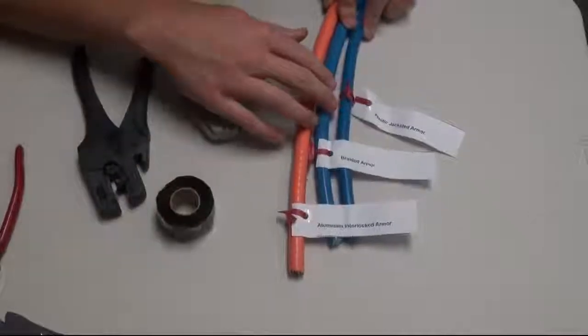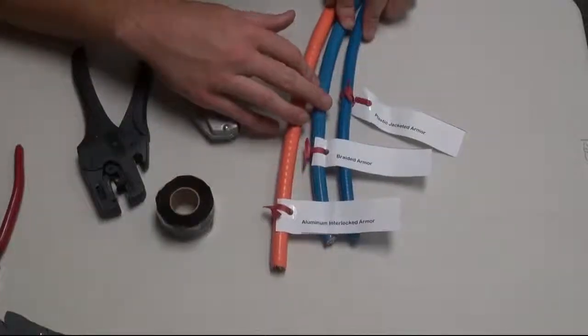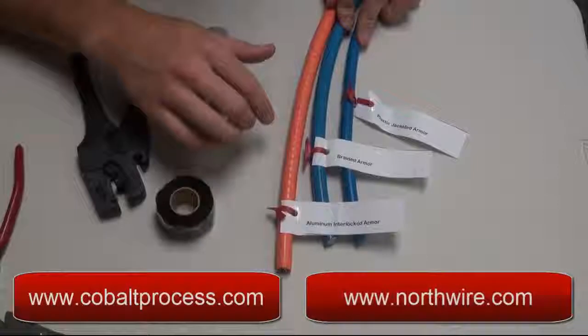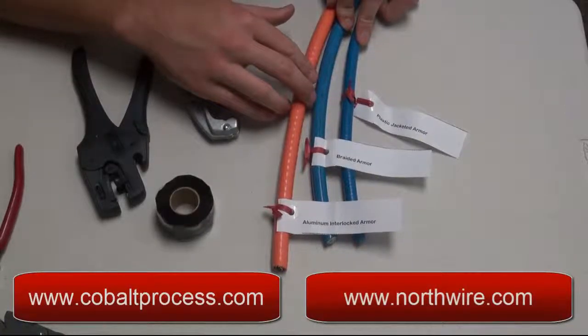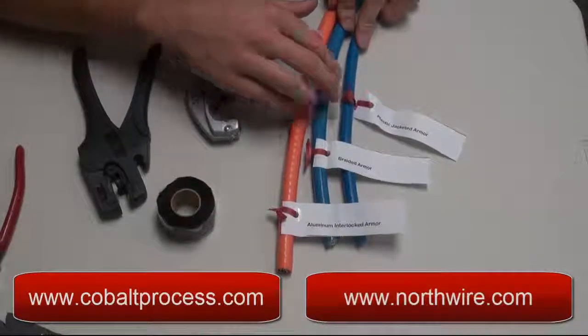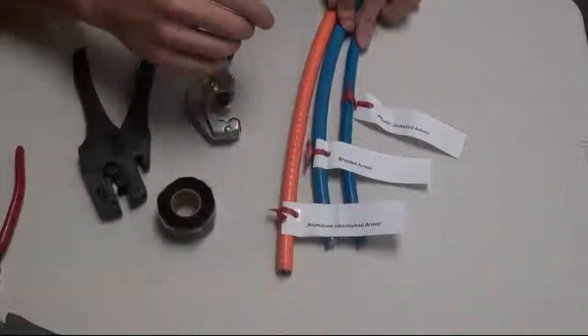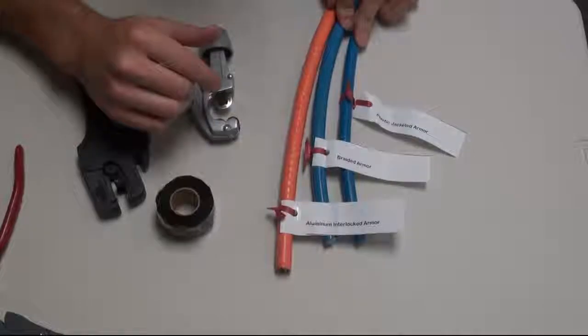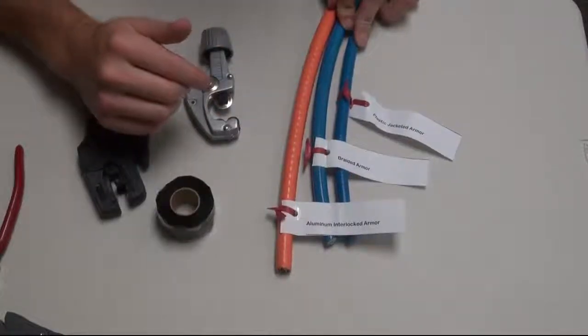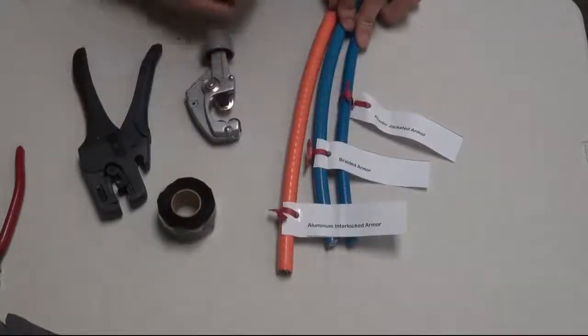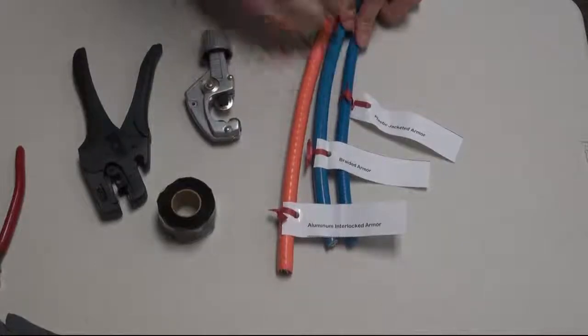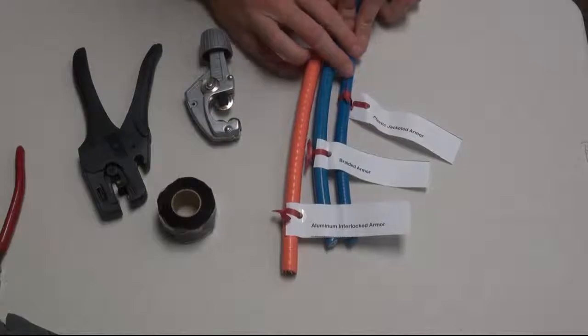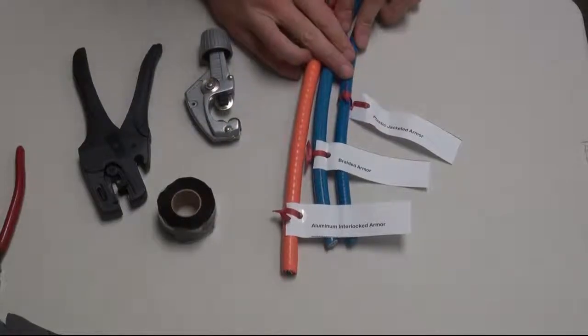And then of course the wires that Northwire sent over. Again, big thanks to both these companies. Northwire was really nice to get this stuff all together and send it over quick so I could do this. So anyway, great wires that they got. Aluminum interlocking armor, braided armor, and then of course plastic jacketed example. These are all plastic jacketed, but this empty set here was real nice for them to send. So hopefully this was beneficial to all of you guys and thanks for watching.